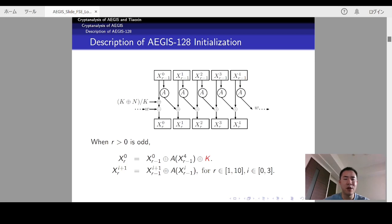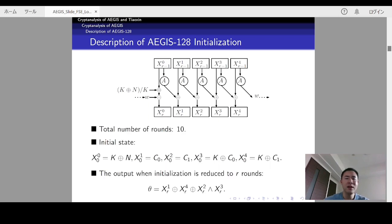If R is odd, updating XR0 will involve K. However, when R is even, updating XR0 will involve both K and N, where K and N denote the 128-bit key and 128-bit nonce respectively. There are in total 10 initialization rounds, and the initial state is defined in this way, where C0 and C1 are both 128-bit constants.